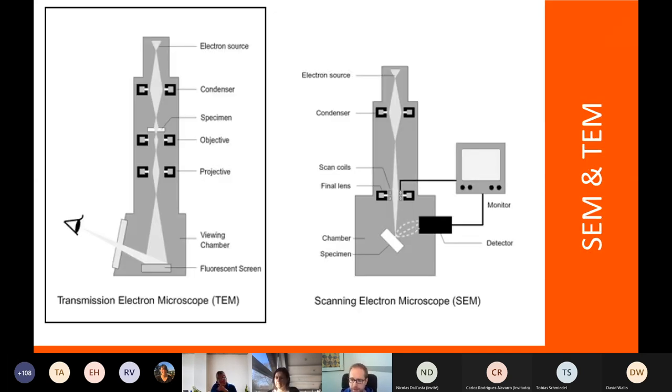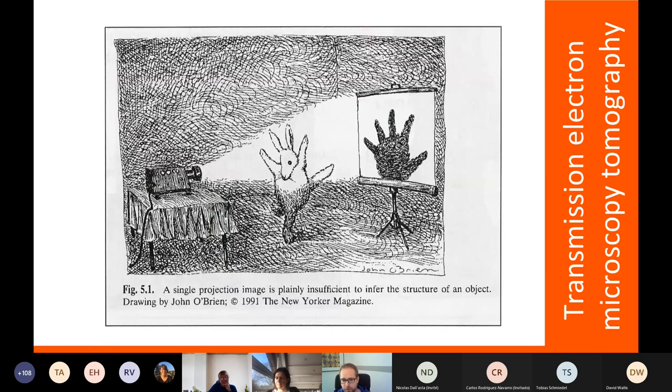Just to remind ourselves, two types of electron microscope: scanning and transmission electron microscopy. In the TEM we have an electron source that goes through the sample and then an image on the fluorescent screen that we can observe. We can take this analog right here where we have a projector and a little rabbit dancing in front of it, but what you see in the back actually looks like a hand rather than a rabbit. This tells us that a single projection image is plainly insufficient to infer the structure of an object potentially.